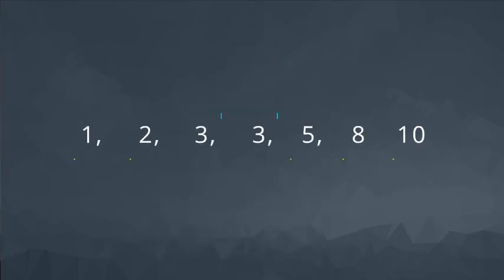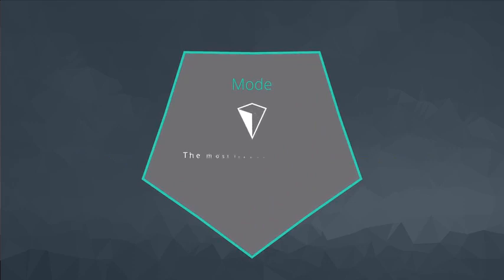The third measure of center aims at providing us the most common value in the data set. In this data set, this is the value of three. The value that occurs most often is known as the mode.